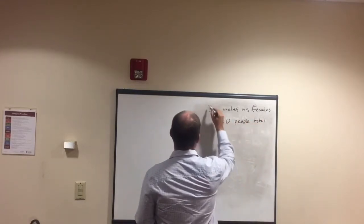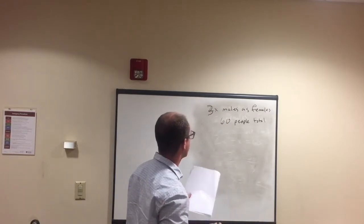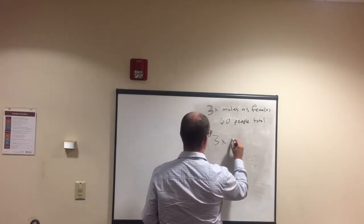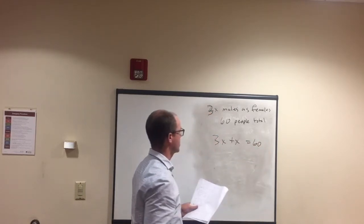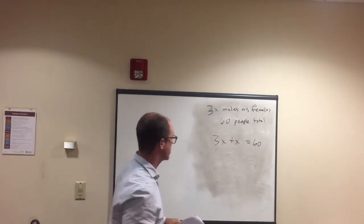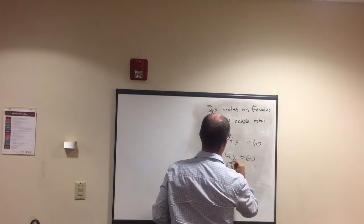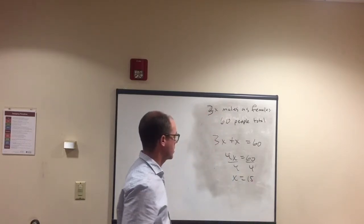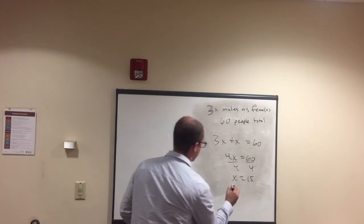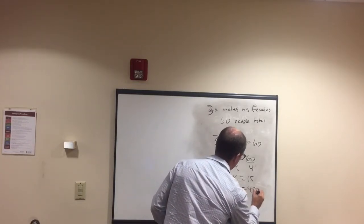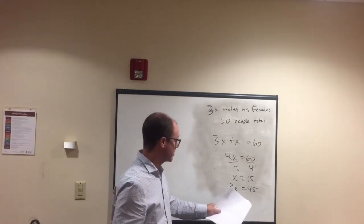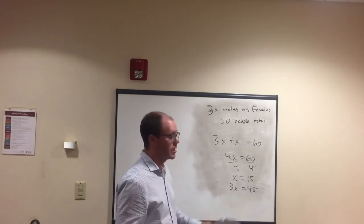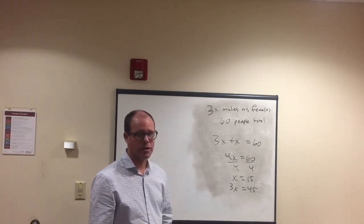What if it's 3 times as many males as females, still with 60 total? Same approach: 3x plus x equals 60, so 4x equals 60. Divide by 4 on each side and x equals 15, which represents females. Males are 3x: 3 times 15 is 45. Check: 45 plus 15 is 60, and 15 times 3 is 45 — so we have 3 times as many males as females. Everything works out.